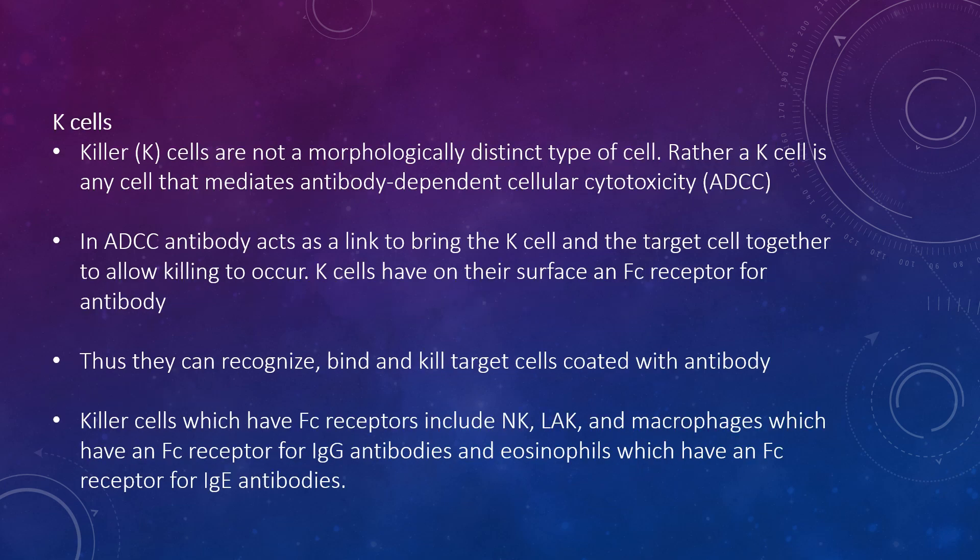K cells are not morphologically distinct cells. A K cell mediates antibody-dependent cellular cytotoxicity (ADCC). In ADCC, antibodies act as a link to bring the K cell and the target cell together to allow killing to occur. K cells have an Fc receptor on their surface for antibodies, and they recognise, bind, and kill target cells that have antibodies bound to them. Killer cells which have Fc receptors include natural killer cells, LAK cells, and macrophages — which have an Fc receptor for IgG antibodies — and eosinophils — which have an Fc receptor for IgE antibodies.